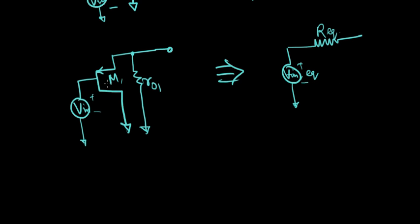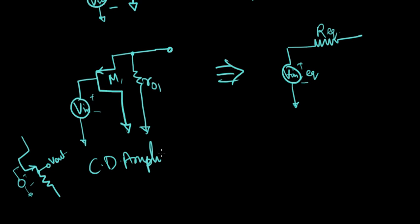Now what does this circuit look like basically? If we think hard enough, it's just a MOSFET whose gate has an input voltage and the output is being taken out from the source terminal. And where have we seen something like that before? So the input voltage is given to the gate and from the source terminal you're taking the output voltage — it's just a common drain amplifier.